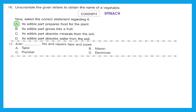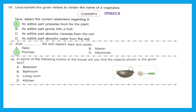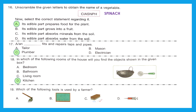Question 17: a dash fits and repairs taps and pipes — who does that? It is option C, plumber. Question 18: in which room of a house will you find the objects shown in the box? The objects are utensils, and we use utensils in the kitchen to cook food. So option D is the right answer. Question 19: which of the following tools is used by a farmer? Option A is a hoe — yes, used by a farmer. Options B and C are blackboard, duster, and chalk, used by a teacher. Option D is an injection, used by a doctor. Option A, hoe, is the right answer.